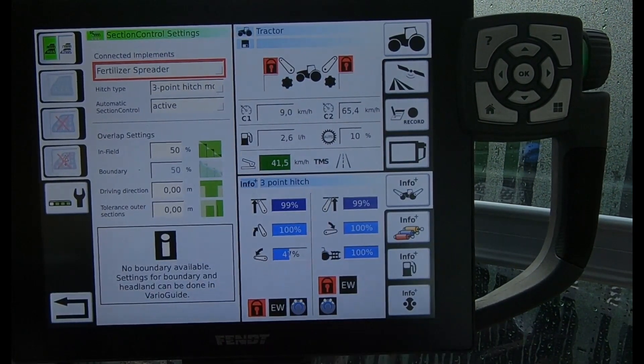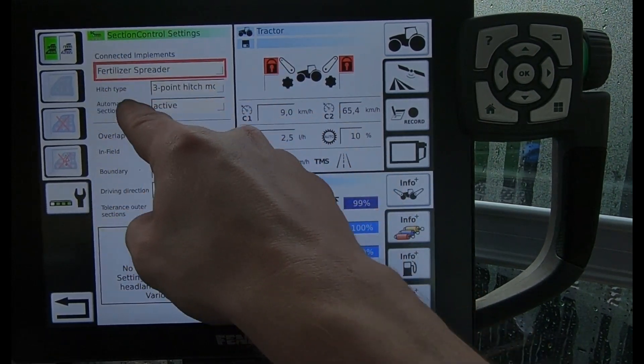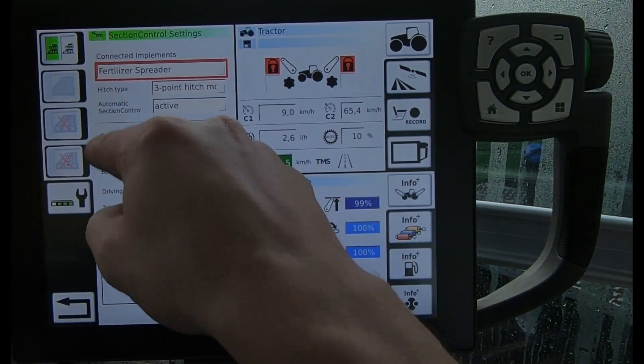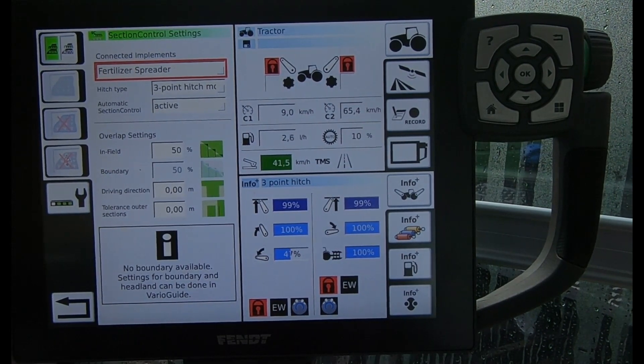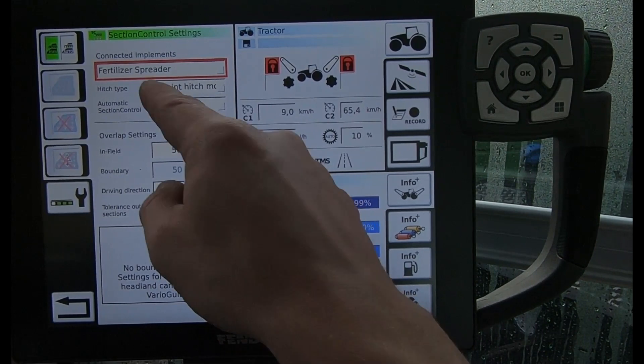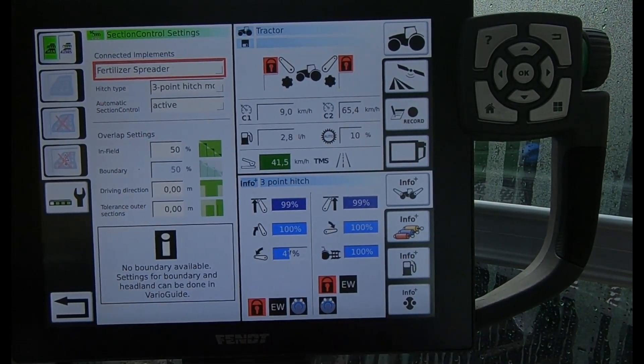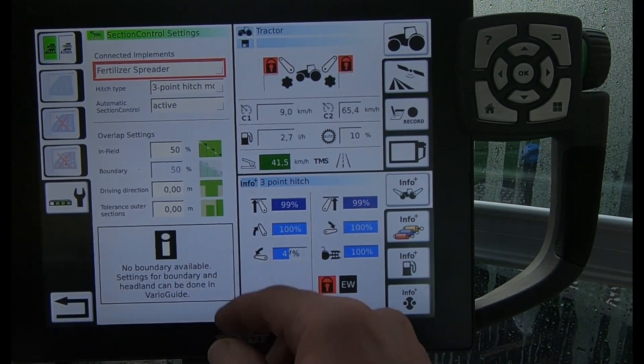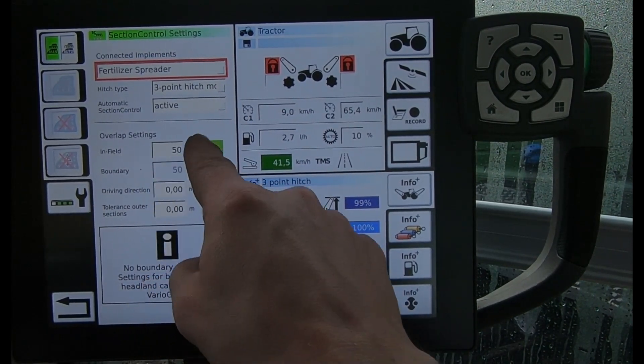Up here we can see the implements that we're controlling within here. If I had something with two control targets, so it might be a seed rail and a fertilizer rail on a drill, I'd see two control targets there that I could alter and select between.